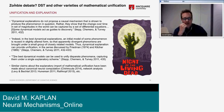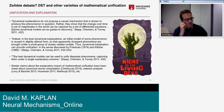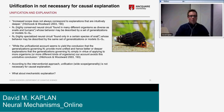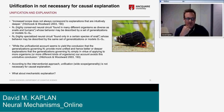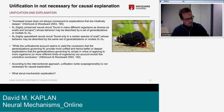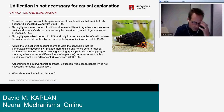Similar claims about the explanatory import of mathematical unification have been made about other kinds of models — canonical neural computational models, network analysis models, and others. So why is this a problem? I think it's a problem and these arguments are in the background of some of Colombo and Hartmann's claims. It's worth being explicit about why unification and explanation shouldn't be tied together.